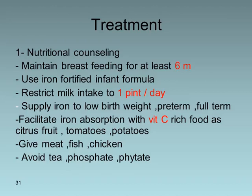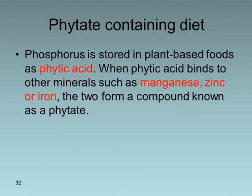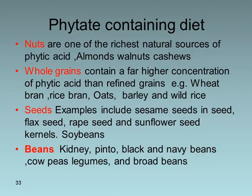Facilitate iron absorption by taking vitamin C–rich foods such as citrus fruits, tomatoes, and potatoes. Give meat, fish, and chicken as iron-rich diet sources. Avoid tea, phosphates, and phytates as they prevent iron absorption. Phytate-containing foods include nuts, whole grains, seeds, and beans — these foods store phosphorus as phytic acid, which binds iron and other minerals to form phytate compounds.